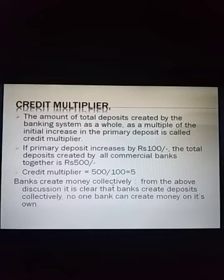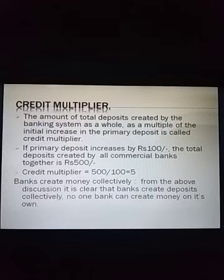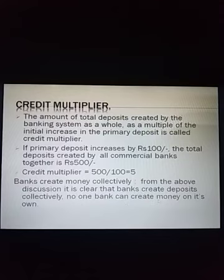Banks create money collectively. Suppose there is only one bank, Bank A. Bank A gets a primary deposit of rupees 100, keeps CRR of rupees 20, and lends 80 to somebody. That person also deposits the same 80 back to Bank A. In this case, credit creation is not possible — the amount is just circulated within the same bank. That is why we say banks create money or credit collectively, as a banking system as a whole. It is very clear that no one bank can create money on its own.